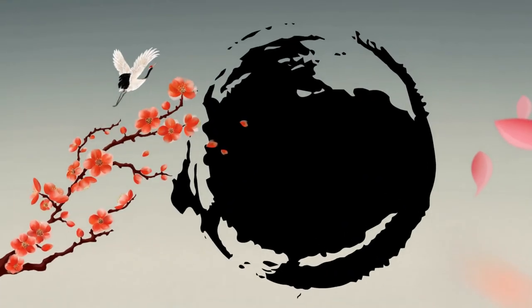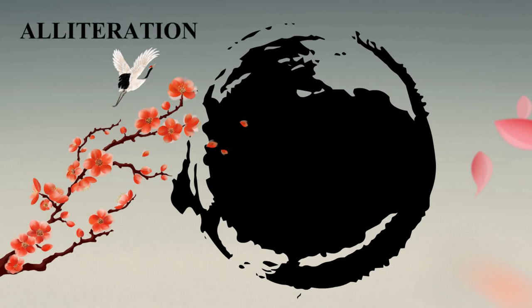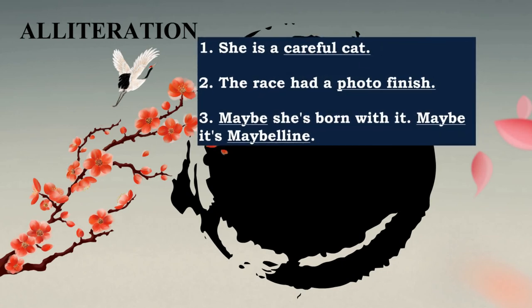Now we move to alliteration — simple yet commonly mistaken. Let's look at the following sentences: 'She is a careful cat,' 'the race had a photo finish,' and 'maybe she is born with it, maybe it is Maybelline.' In the first, there is a repetition of the consonant sound K — careful, cat. In the second, the consonant sound F — photo, finish. And in the third, the word maybe is repeated.